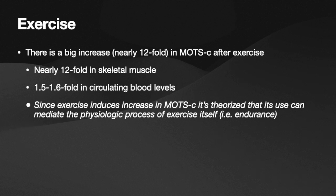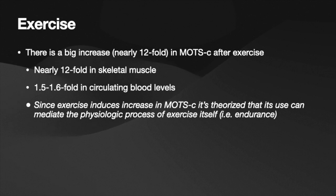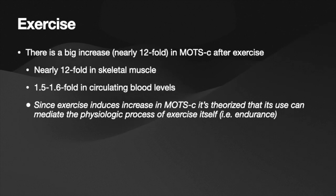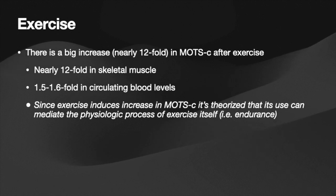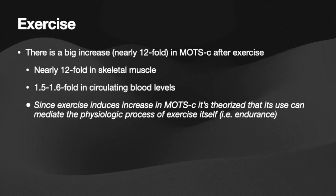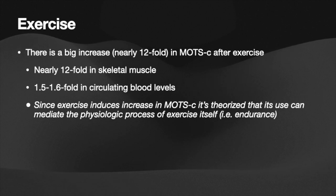Speaking strictly about exercise, there's a big increase — nearly 12-fold, about 11.9-fold — in MOTS-C after exercise. The 12-fold increase is in skeletal muscle, and it's 1.5- to 1.6-fold in circulating blood levels. Since exercise causes these increases in MOTS-C, it's theorized that its use can mediate or create the physiologic processes of exercise itself, as if the body exercised without actually doing so. This is really exciting for things like endurance, the aging population, and people who cannot exercise due to injury or other disorders.